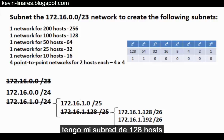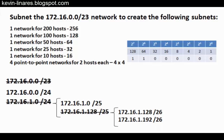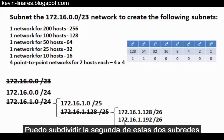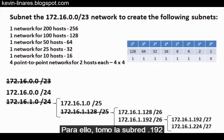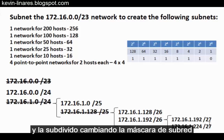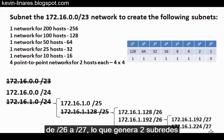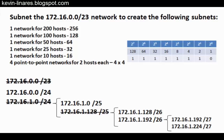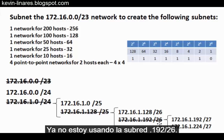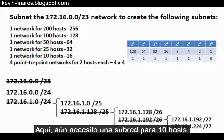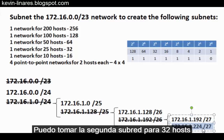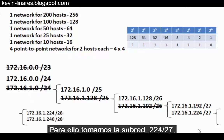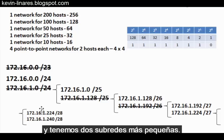I can subdivide the second of these two /26 subnets into two smaller subnets of 32 hosts each. I take the 192 subnet and change the subnet mask from /26 to /27, creating two subnets of 32 hosts each — a 192/27 subnet and a 224/27 subnet. From here, I still need a subnet for 10 hosts. I take the second of these two 32-host subnets and subdivide it into two 16-host subnets by taking the 224/27 subnet and changing the mask from /27 to /28, giving me two smaller subnets.